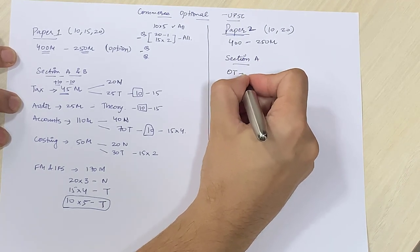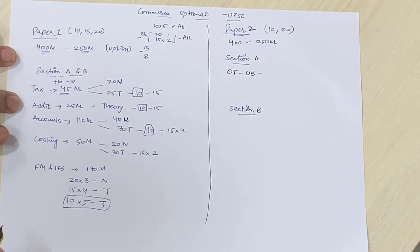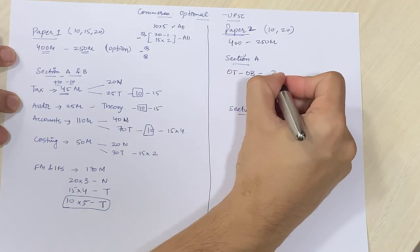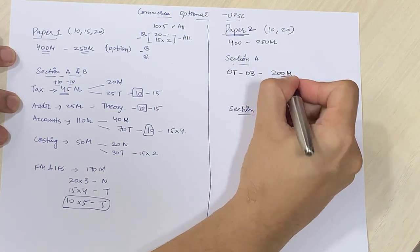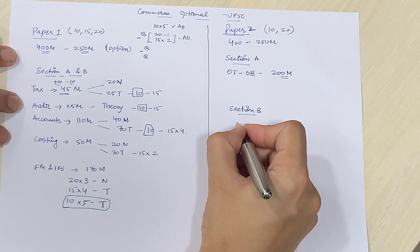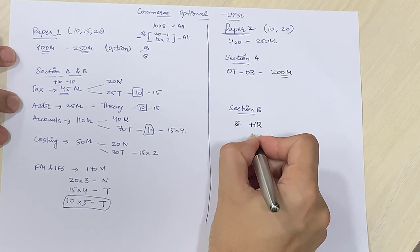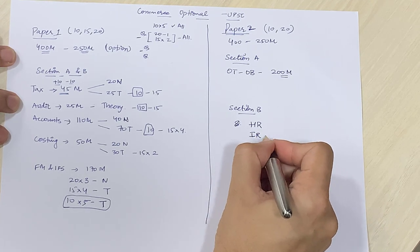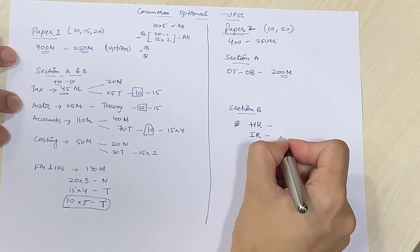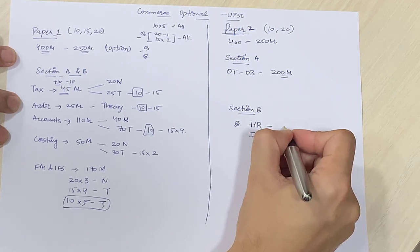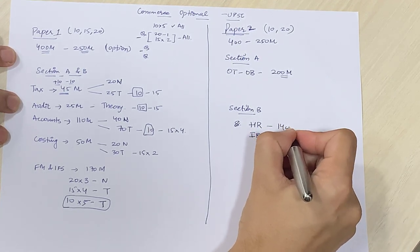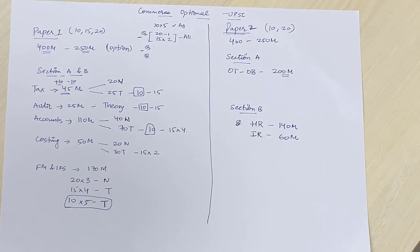If we come to section A, organization theory and organization behavior cannot be separated very easily. But yee dekha gaya hai that majority of the questions, 200 mein se 200 number ke questions normally come from organization theory and organization behavior only. If we come to section B, then it can be divided into human resource, development and management and industrial relations. Industrial relations ka normal break up 60 marks ka hota hai. And human resource ka normal break up 140 marks ka hota hai. So this is the normal break up of OTOB, HR and IR.